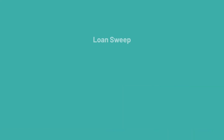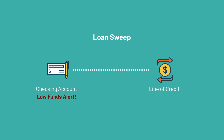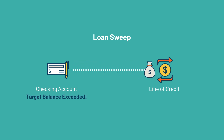With a loan sweep, your checking account is connected to a line of credit from your financial institution. Whenever your checking balance dips below a designated amount, funds are automatically drawn from your credit line. But if your checking funds exceed a target balance, the amount above that level is swept to your credit line to pay down your balance and reduce your interest costs.